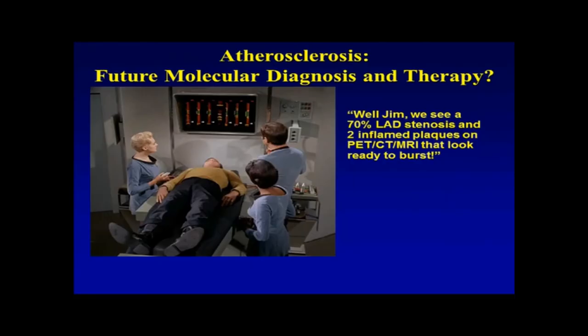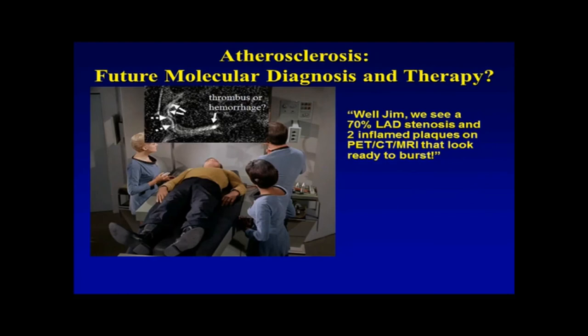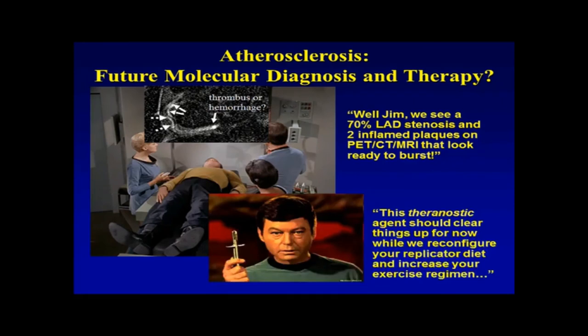For atherosclerosis, what would be ideal for the future is molecular diagnosis and therapy — almost everything was discovered on Star Trek. If you had a PET-CT scan with FDG lighting up in the coronaries, or contrast showing enhancement of the coronary wall and evidence of intraplaque hemorrhage or thrombus, we could identify both the stenosis and inflamed plaques that look ready to burst. Then we could give a targeted theranostic agent that could clear things up while we improve diet and increase exercise.